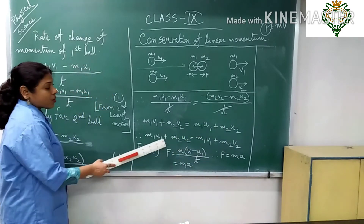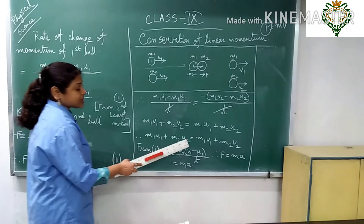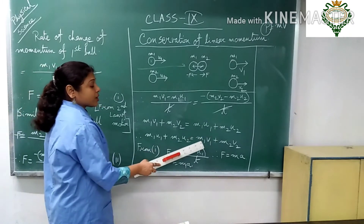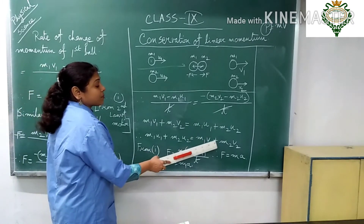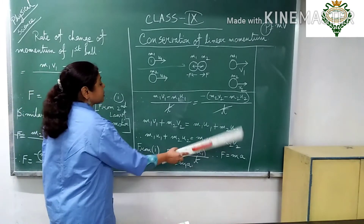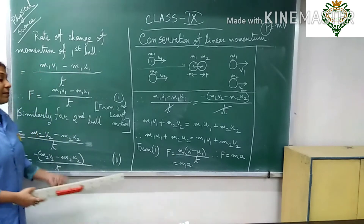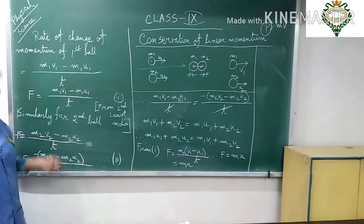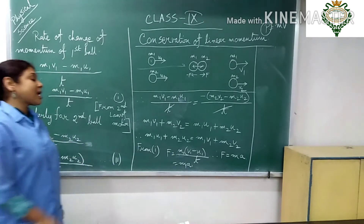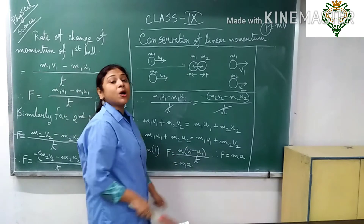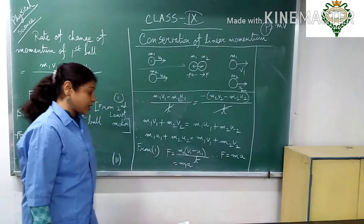Therefore, M1·V1 plus M2·V2 is equal to M1·U1 plus M2·U2. This means the total momentum after the collision equals the total momentum before the collision — the law of conservation of linear momentum is proved.